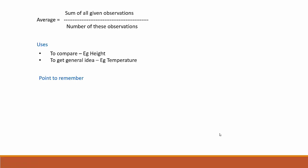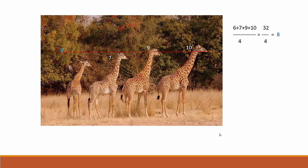A point to remember about averages is that the average will always be in between the maximum and minimum values. In the previous giraffe example, the minimum height is six feet and the maximum height is ten feet. The average we found is eight feet, and eight is indeed in between six and ten.